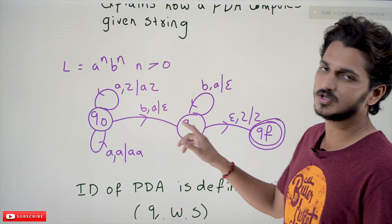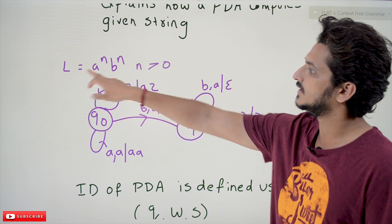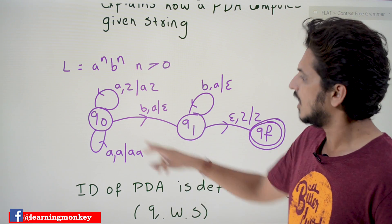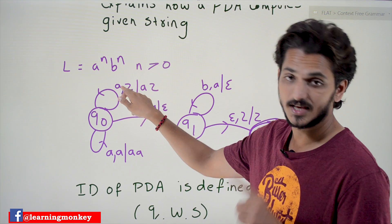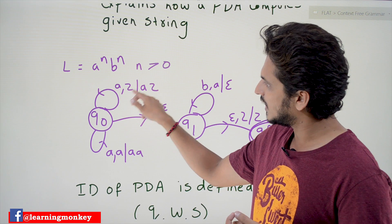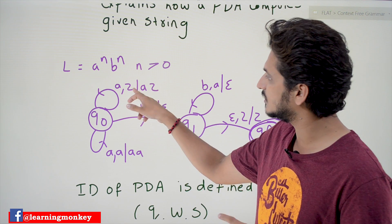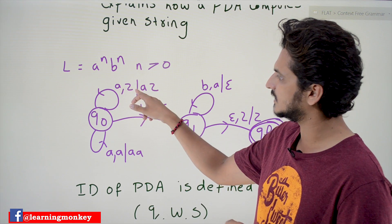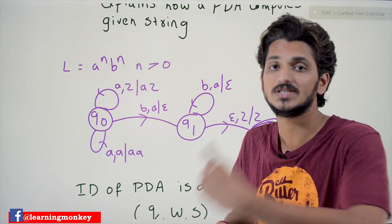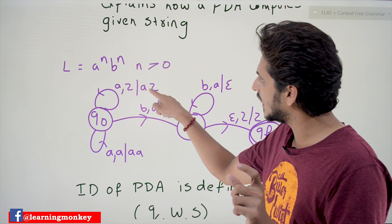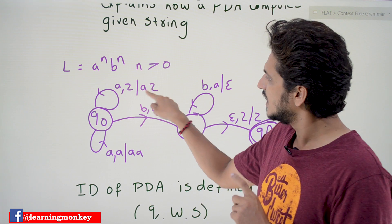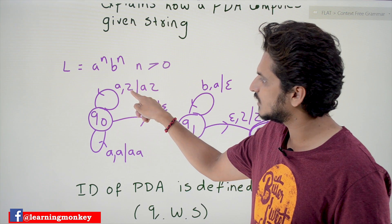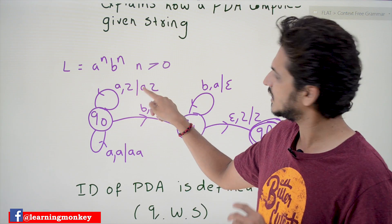Let's refresh the concept discussed in our previous classes. Given language L = aⁿbⁿ, n > 0, for this language we constructed a pushdown automata. On state q₀, if the input symbol is 'a' and the stack top is Z (the starting symbol), we push 'a' onto the stack. The push operation is shown as 'AZ' — meaning the top two symbols on the stack are 'A' and 'Z' after pushing 'A' onto a stack that previously contained Z.